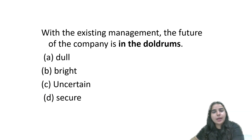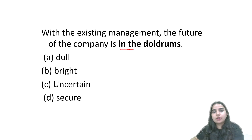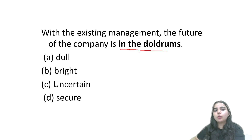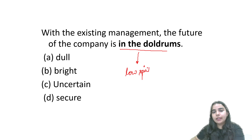With the existing management, the future of the company is in the doldrums. Doldrums means when you are low-spirited, when you are not very bright. So the answer is: dull.